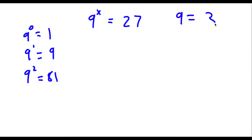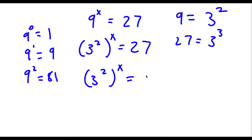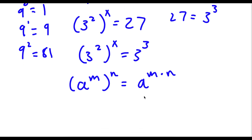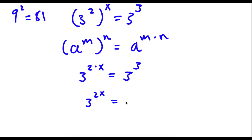9 is the same thing as 3 to the power of 2. So if I replace 9 with 3 to the power of 2, I get 3 to the power of 2 to the power of x is equal to 27. Now 27 is equal to 3 to the power of 3, so I replace 27 with 3 to the power of 3. If I have something in the form a to the power of m to the power of n, this equals a to the power of m times n. So 3 to the power of 2x is equal to 3 to the power of 3.